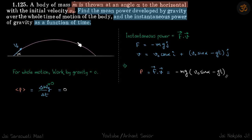So for the total duration, work done by gravity is zero. That means the average power, which is work done by total time, is also zero.